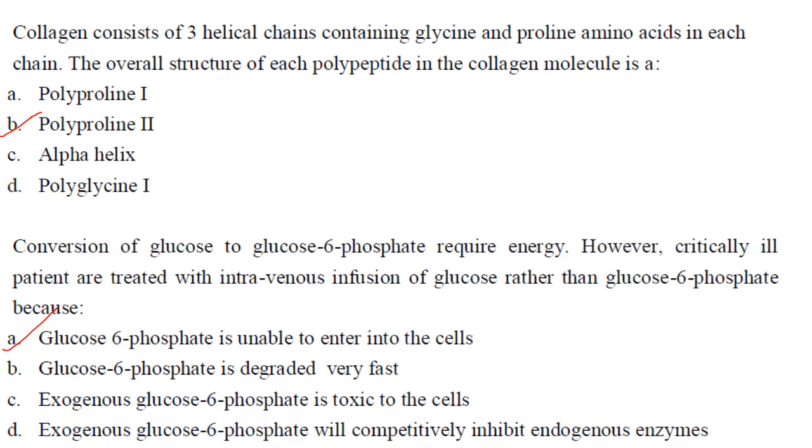Collagen consists of three helical chains containing glycine and proline amino acids in each chain. The overall structure of each polypeptide in the collagen molecule is polyproline II, answer is option B. Conversion of glucose to glucose-6-phosphate requires energy. However, critically ill patients are treated with intravenous infusion of glucose rather than glucose-6-phosphate because glucose-6-phosphate is unable to enter into the cell. Only glucose can enter but not glucose-6-phosphate. So the answer is option A.